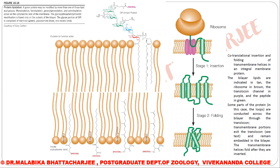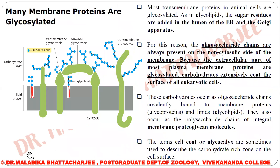These are GPI anchored proteins — proteins anchored to the phospholipid by GPI anchorage. This was something discussed previously. Moving on, we understand that carbohydrates are in the majority present on the exterior surface — they are attached to lipids or proteins on the outer leaflet of the lipid bilayer.